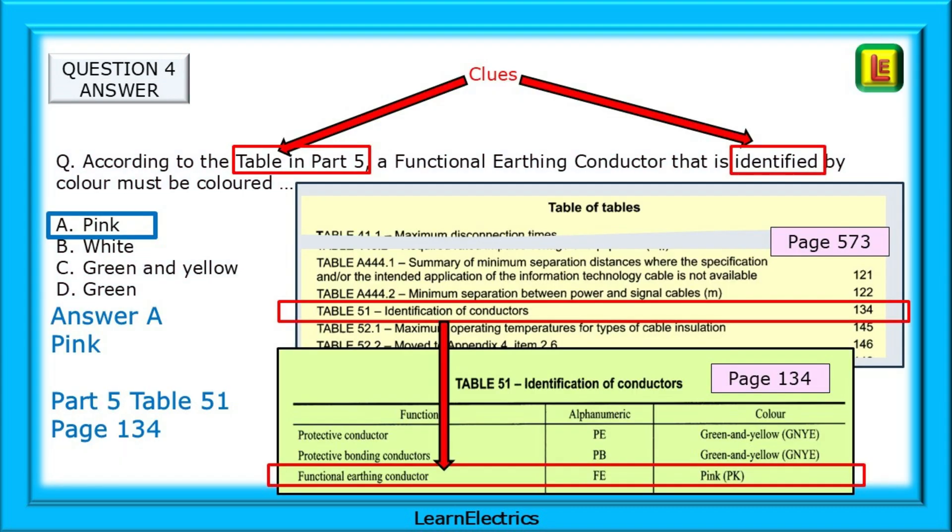The answer is pink, answer A. The two clues here were the table in part 5 and the word identified. Looking on page 573, we can see that identification of conductors is table 51 on page 134. Finding table 51, look three lines down and we have functional earth should be coloured pink.